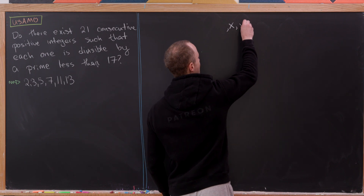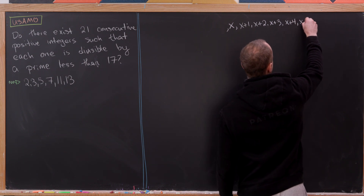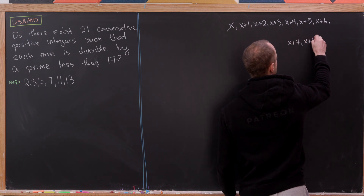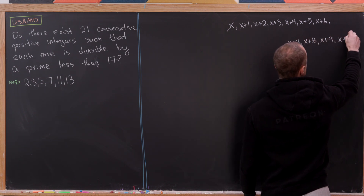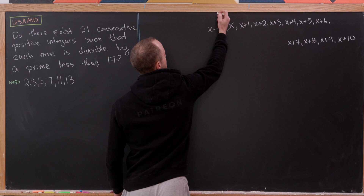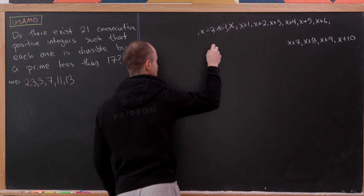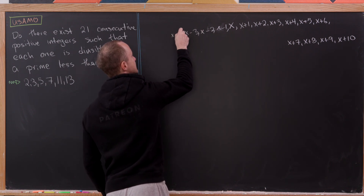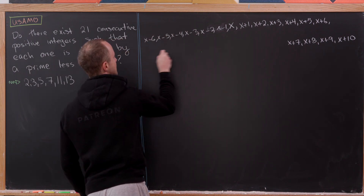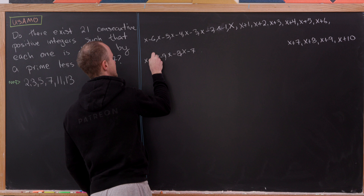Forward we would have x+1, x+2, x+3, x+4, x+5, x+6, and then x+7, 8, 9, and 10. And if we work backwards, we would have x-1, x-2, x-3, x-4, x-5, x-6, and then x-7, x-8, x-9, and x-10.